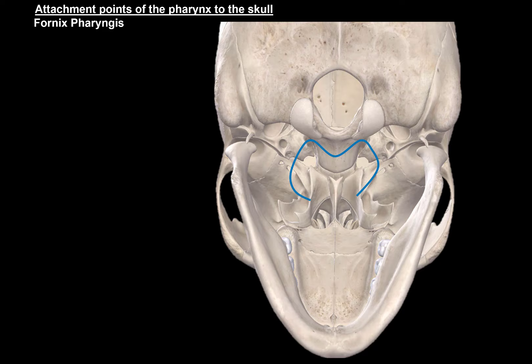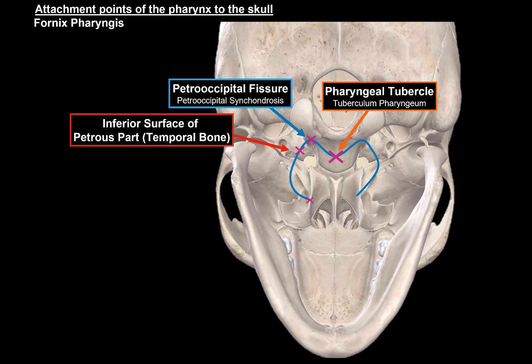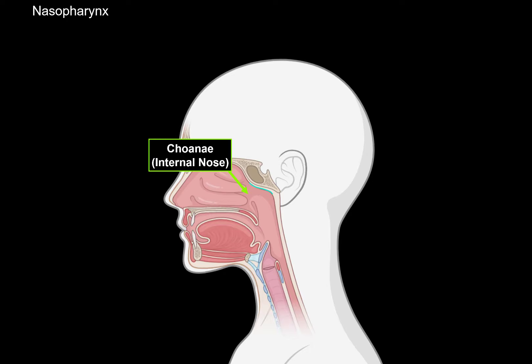There are some important landmarks when talking about the vault of pharynx. We have the pharyngeal tubercle of the occipital bone, which is the basal part of the occipital bone. The next attachment point is where the occipital bone and the petrous part of the temporal bone fuse — this is called the petro-occipital fissure. It's also attached to the inferior border of the petrous part of the temporal bone, and to the medial lamina of the pterygoid process. So the pharynx is attached to these structures and forms the vault of pharynx. There is also a strict border called choanae, or the internal nose, which separates the nasal cavity from the pharynx.